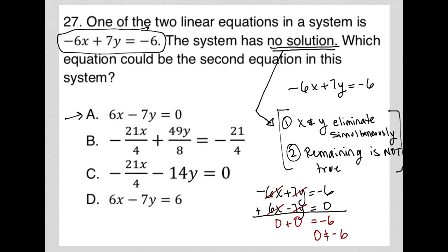So both things happened, right? x and y eliminated just by adding the equations together and the remaining 0 equals negative 6 is not true. So choice A must be the correct answer.